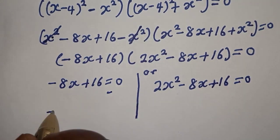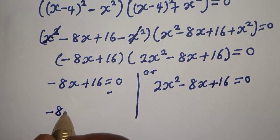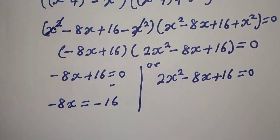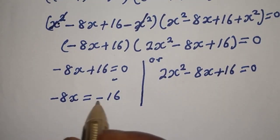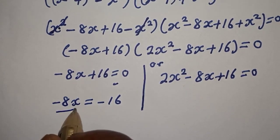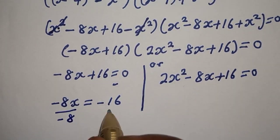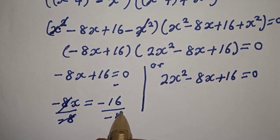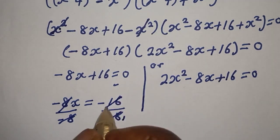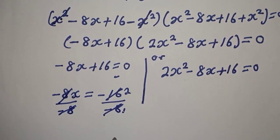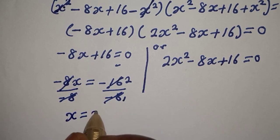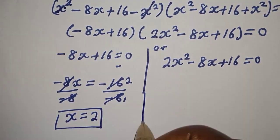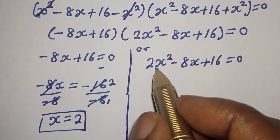From Case 1: minus 8s equals minus 16. Dividing both sides by minus 8, we get s equals 2. This is the first solution.